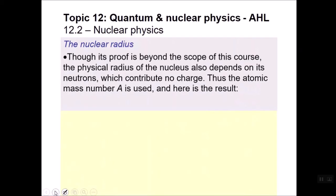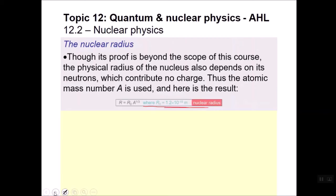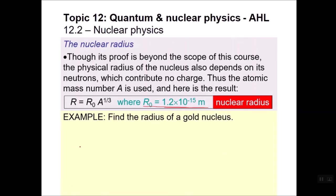Now then, if we want to find it more accurately, we can use this equation. We're not going to derive this equation. You just have to take IB's word for it that this is correct. And we'll universally use R-naught as 1.2 times 10 to the minus 15th meters. So that's what we're using.